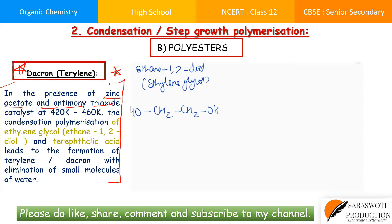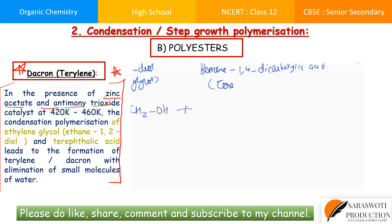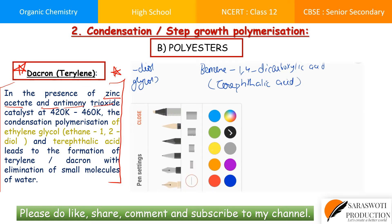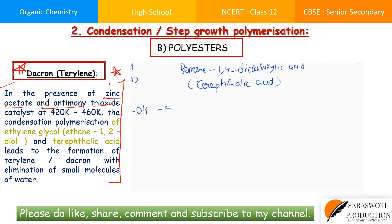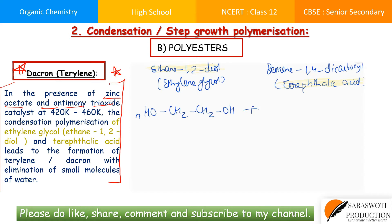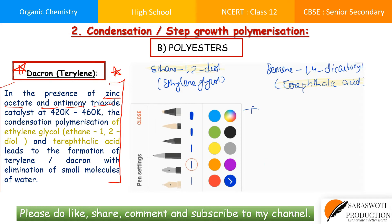Monomer two is called benzene-1,4-dicarboxylic acid (IUPAC name), whose common name is terephthalic acid. For exam purposes: the common name ethylene glycol is commonly asked for monomer one, and terephthalic acid is commonly asked for monomer two. They may ask: given ethane-1,2-diol and terephthalic acid, what polymer do you get?